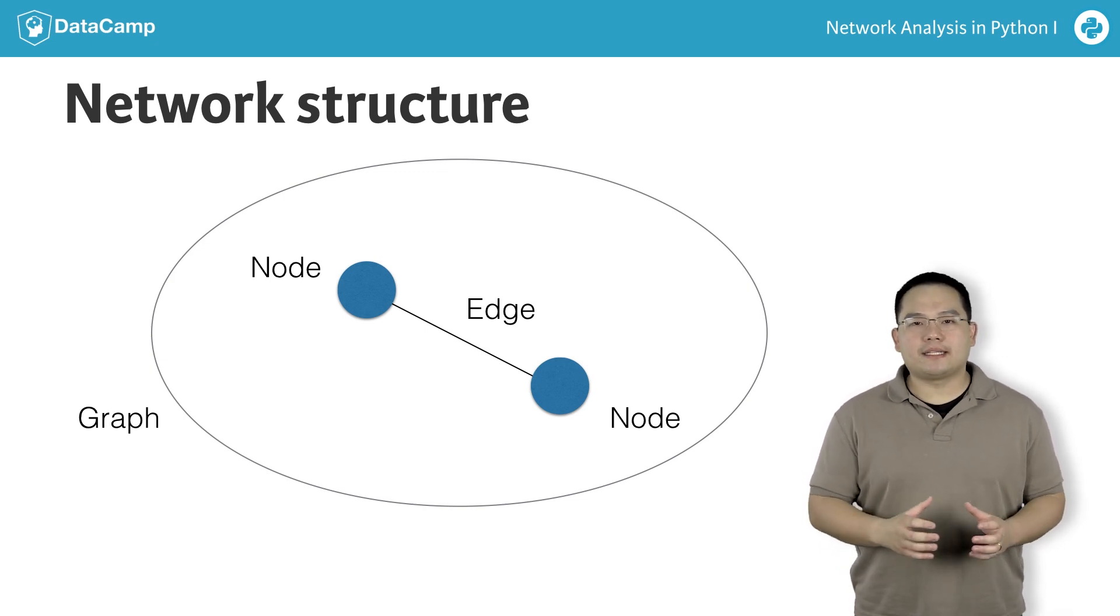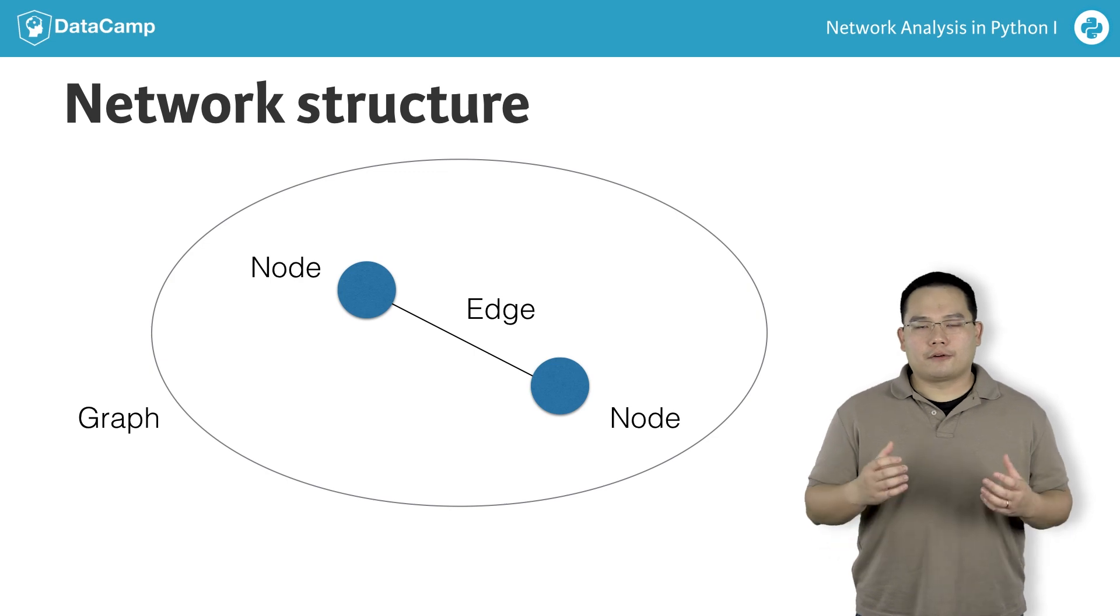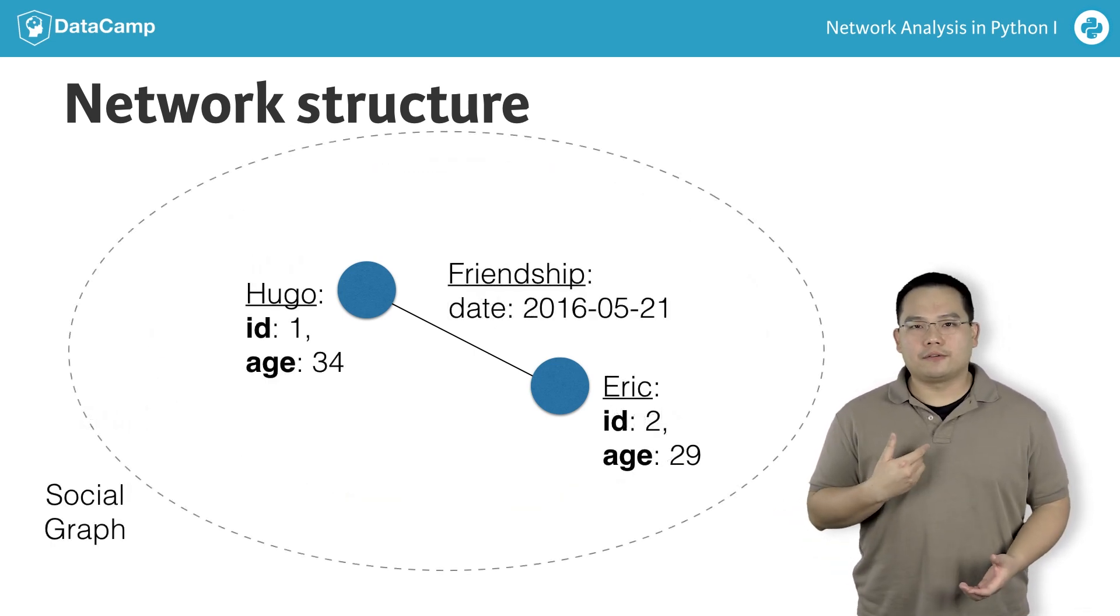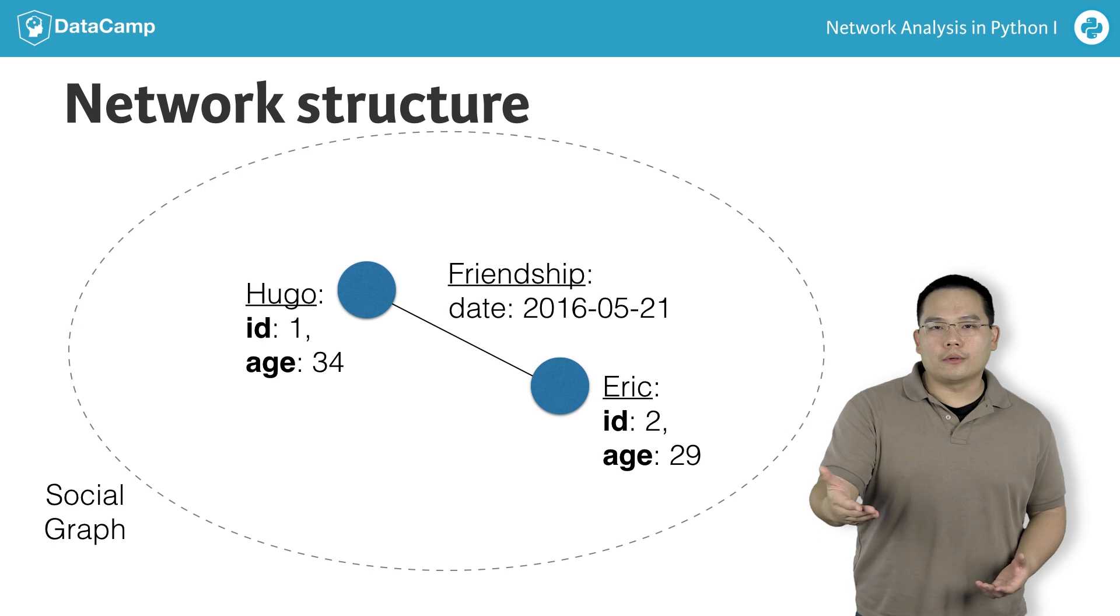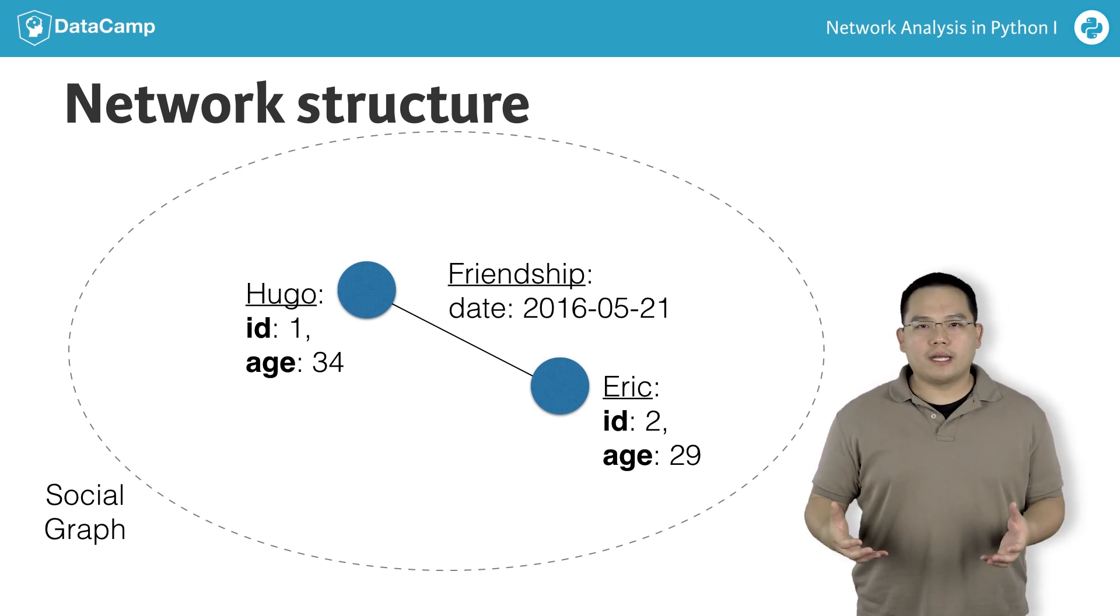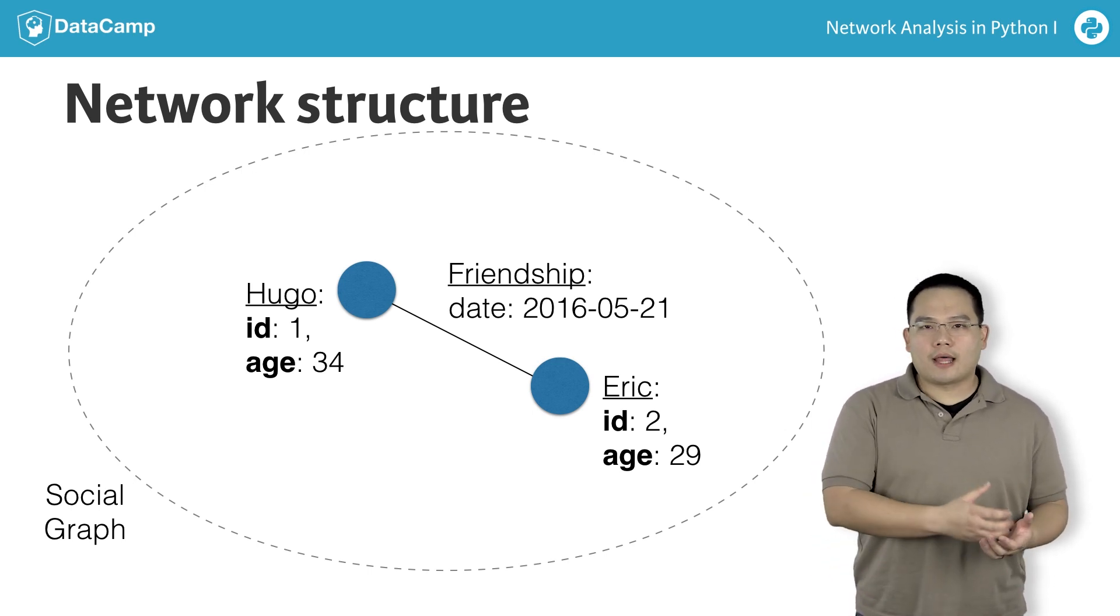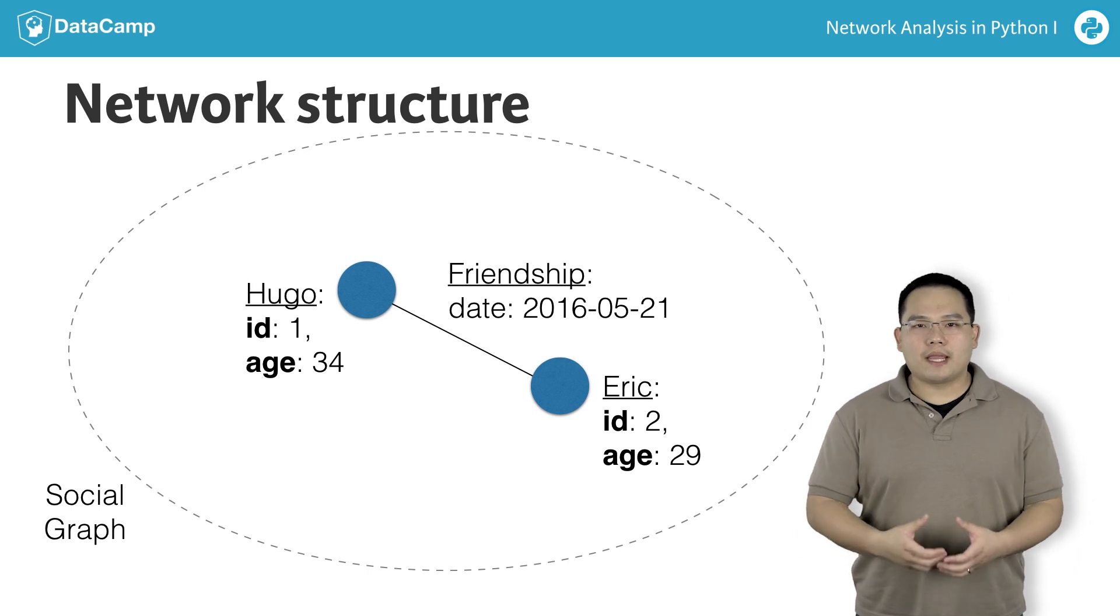Nodes and edges can have metadata associated for them. For example, let's say there are two friends, Hugo and myself, who met on the 21st of May, 2016. In this case, the nodes may be Hugo and myself, with metadata stored in a key value pair as ID and age. The friendship is represented as a line between the two nodes, and may have metadata, such as date, which represents the date on which we first met.